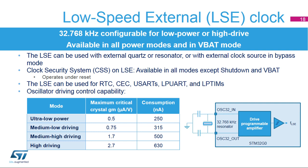The 32.768 kHz low-speed external oscillator can be used with an external quartz or resonator, or with an external clock source in bypass mode. The oscillator driving capability is programmable; four modes are available, from an ultra-low-power mode with a consumption of only 250 nanoamperes to a high-driving mode. A clock security system monitors for failure of the LSE oscillator. If LSE is used as system clock and a failure is detected, the system clock switches automatically to LSI. The LSE can be used to clock the RTC, CEC, the USARTs or low-power UART peripherals, and the low-power timers.